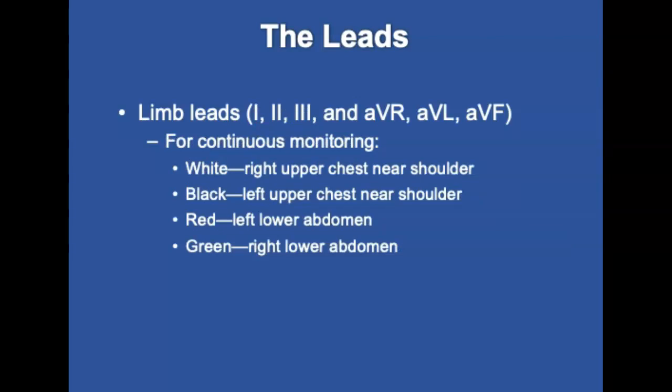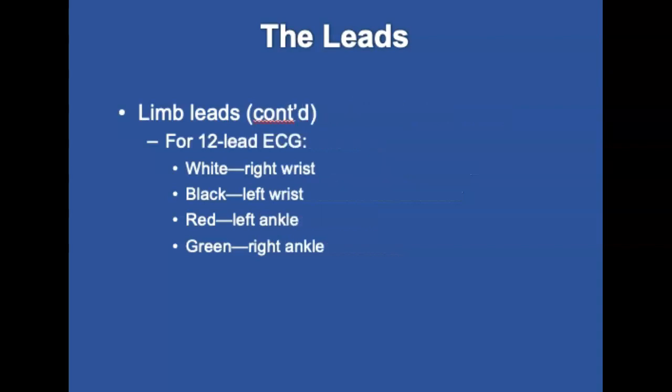For continuous cardiac monitoring, place four electrodes on the patient's torso: white on the right upper chest near the shoulder, black on the left upper chest near the shoulder, red on the left lower abdomen, and green on the right lower abdomen. If acquiring a 12-lead, place the four electrodes on the patient's limbs: white on the right wrist, black on the left wrist, red on the left ankle, and green on the right ankle. Placing these four electrodes allows the ECG device to record all six limb leads using Einthoven's theory. The green lead serves as a ground in all cases and is electrically neutral.